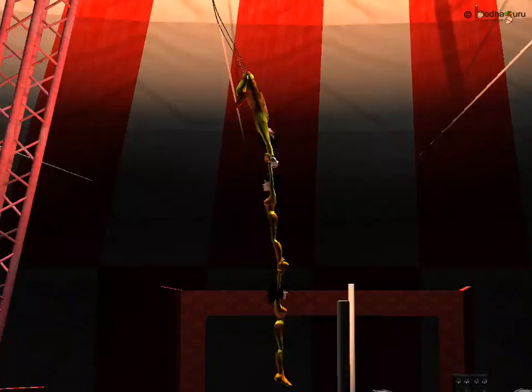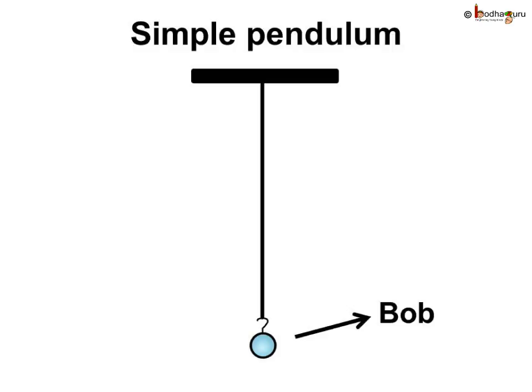So what is this simple pendulum? Like you saw in the circus, a swing was suspended in the air on a rope. A simple pendulum consists of a small metallic ball or a piece of stone suspended from a rigid stand by a thread. The metallic ball is called the bob of the pendulum.